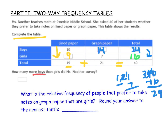How many more boys than girls did Ms. Nother survey? That would be right in here — 24 boys and 16 girls. So how many more boys compared to girls? 24 minus 16 is 8. So 8 more boys were surveyed when compared to the girls, because 24 boys were surveyed and 16 girls were surveyed.